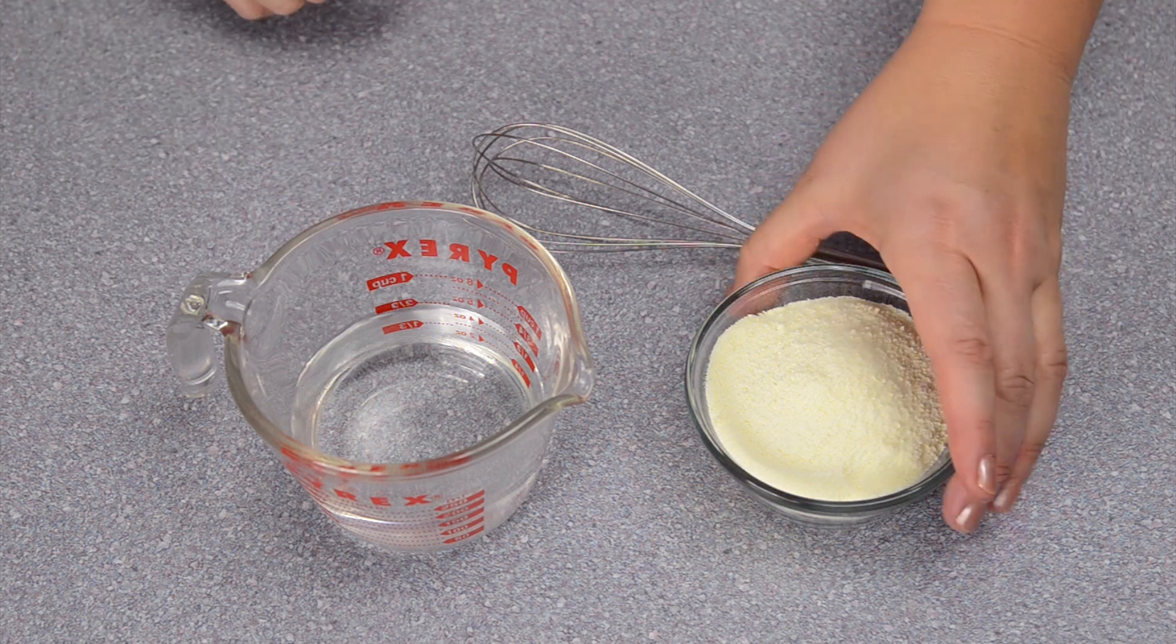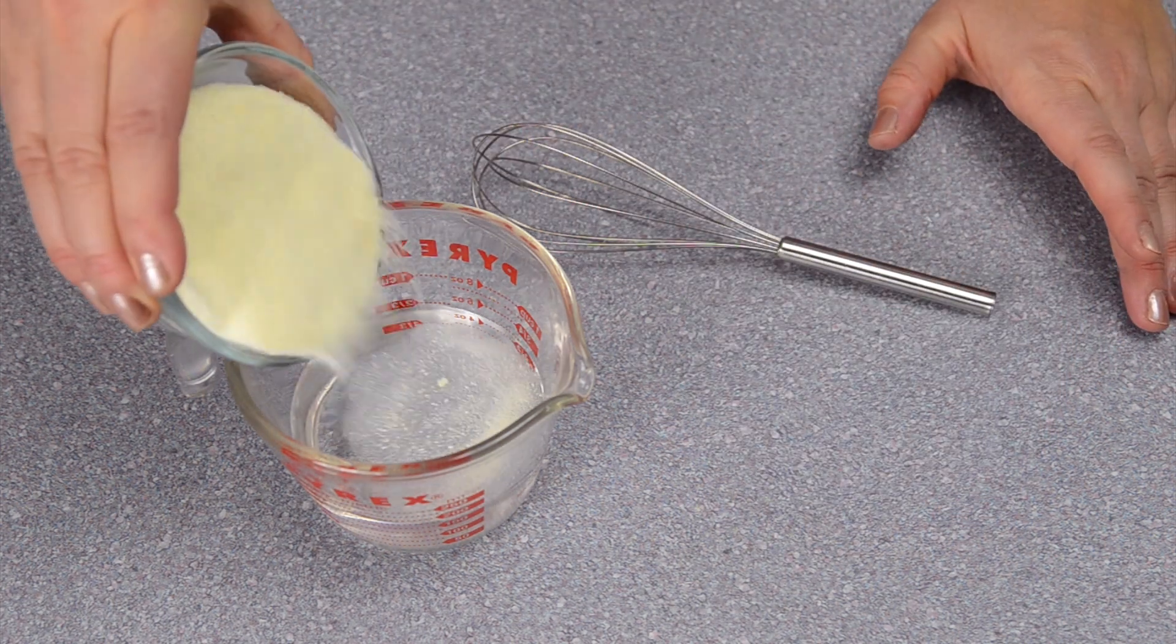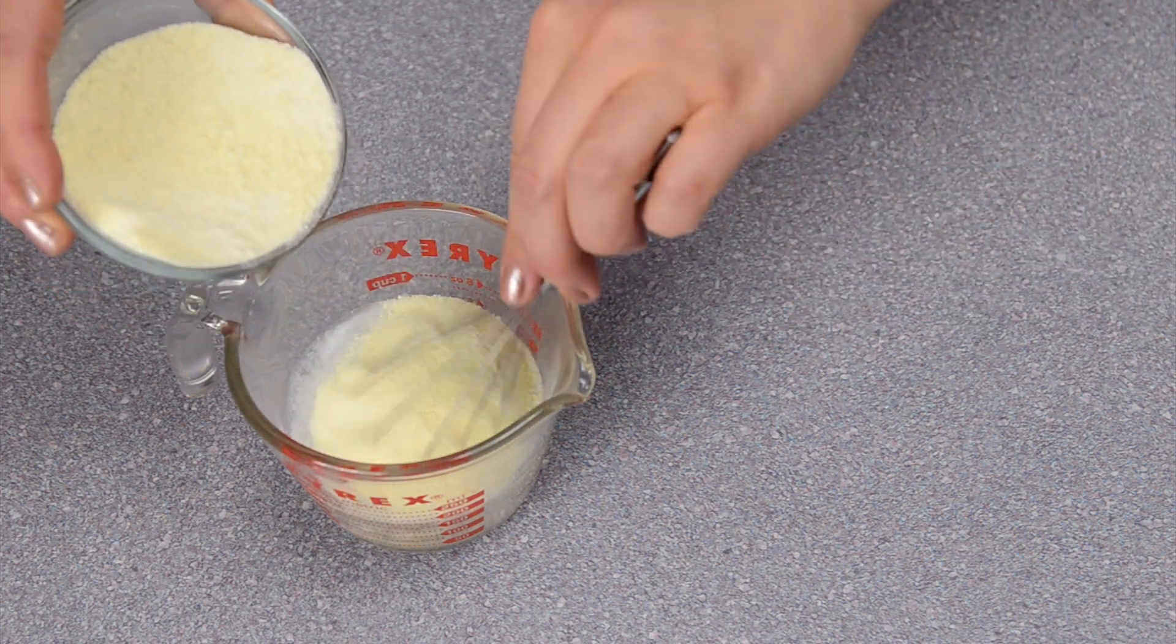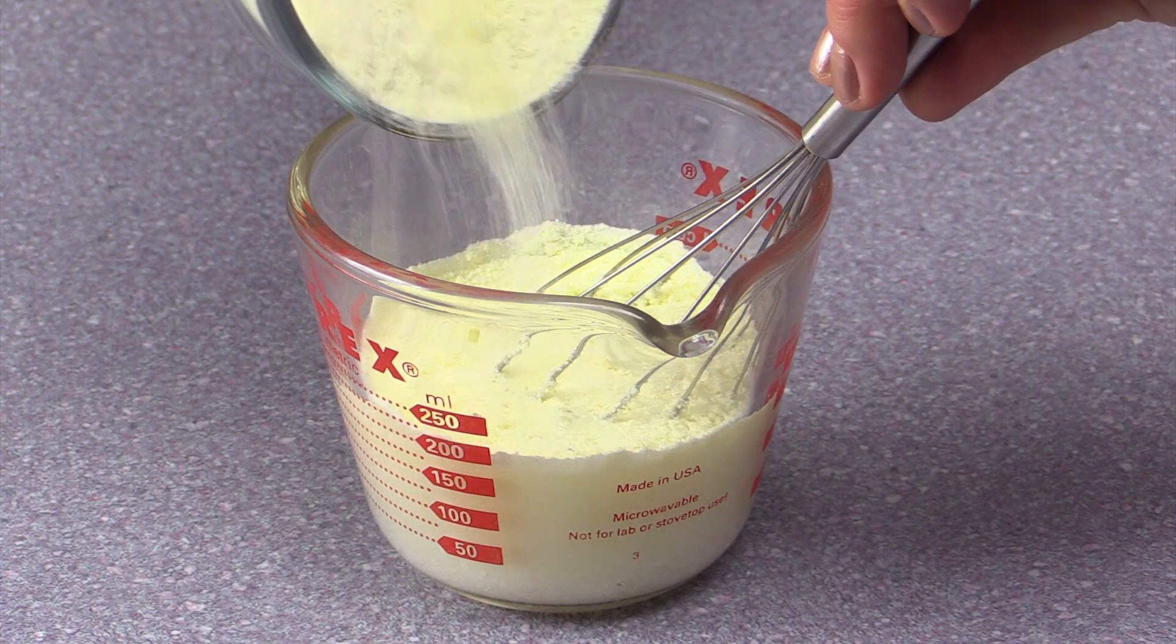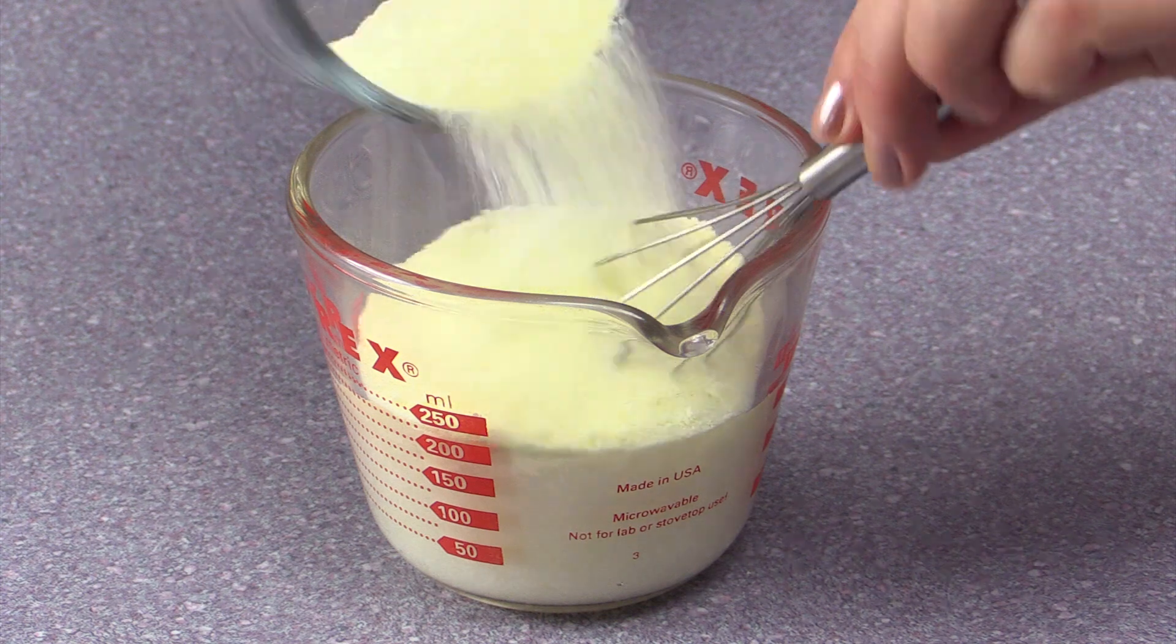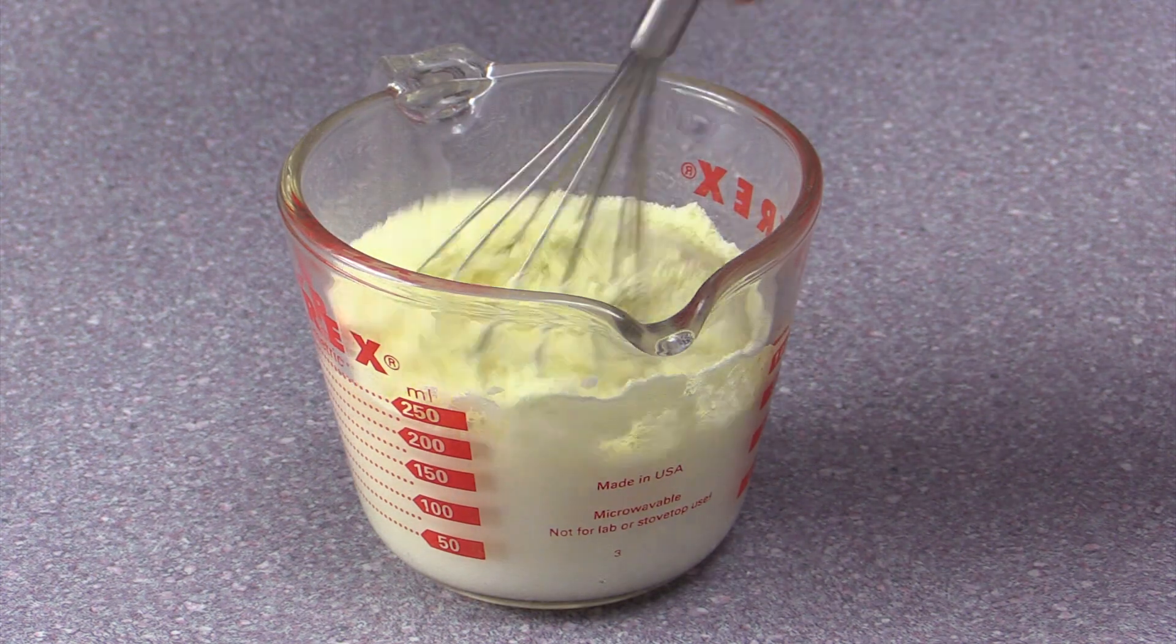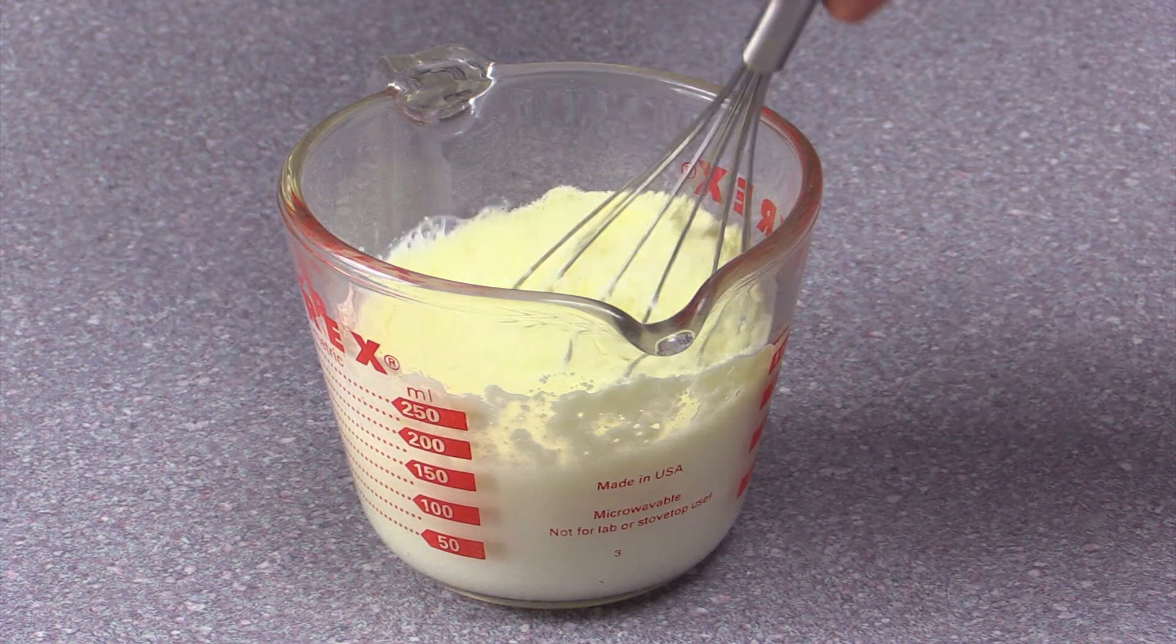To make your own evaporated milk, you just add the skim milk, whisk it up, and mix it up until it's all combined, and you will end up with the equivalent of one cup of evaporated milk.